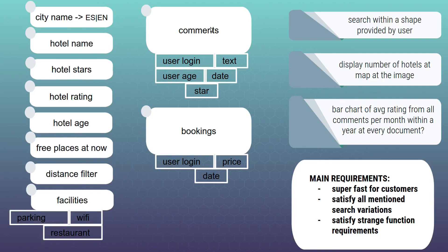We also know that a user can leave some comment at a hotel. In that case we will have additionally: user login, age, date, text of the comment, and the star rating that the user left for the hotel. There is also a section with bookings, where we will note the price of the booking, user login, and date of the booking.